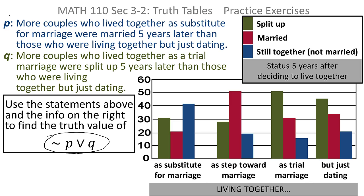They are telling you what the statements P and Q are. Statement P says: more couples who live together as a substitute for marriage were married five years later than those who were living together but just dating. We have to figure out if that's true or false. Statement Q is: more couples who live together as a trial marriage were split up five years later than those who were living together but just dating.